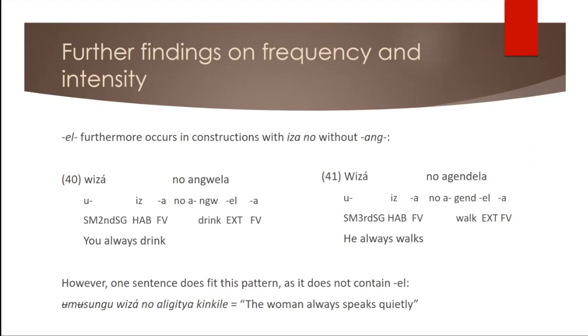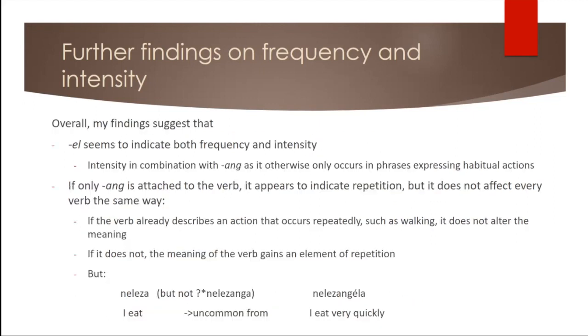And ang on its own, however, also occurs in constructions with itsa no, as we've seen in the beginning. For example, in huitsa no anguela, you always drink or you habitually drink. That was virtually always the case because there was one sentence which does not fit this pattern because it doesn't contain L. And that was umusungu witsa no alikitya kinkile, the woman always speaks quietly.